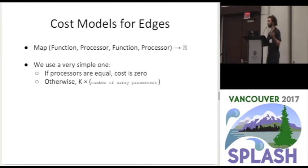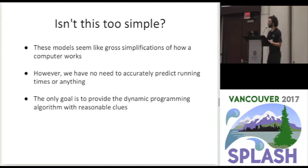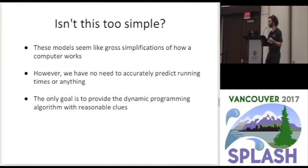You might ask: isn't this too simple to work? It doesn't really reflect how computers work. But we don't need cost models that accurately predict or correlate with running times — we only need models that guide our dynamic programming algorithm to make good choices about which processor should run each function. As long as the numbers are useful for that purpose, we're good.